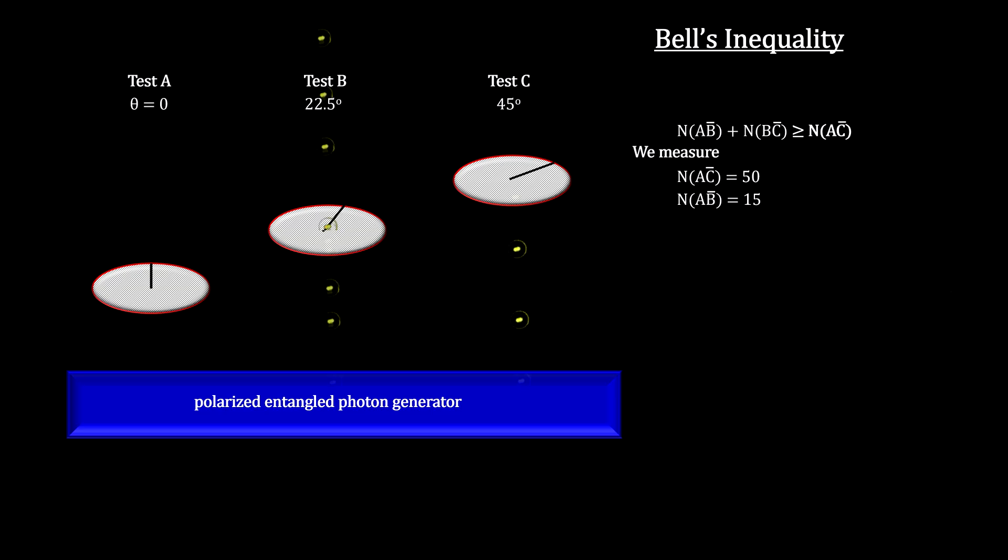In the third phase, they ran 100 vertically polarized entangled photons into lens B, polarized at 22.5 degrees. 85 passed through, and 15 were blocked.